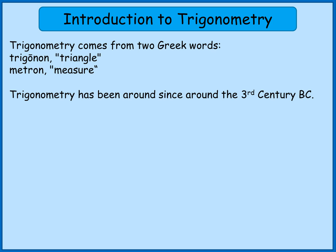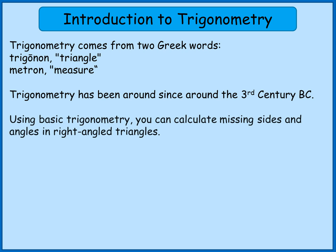It's been around since the third century BC, so it's one of the oldest bits of maths that we've got. The basic trigonometry work is used to calculate missing sides and angles in right-angled triangles. You can do a lot more complicated things with trigonometry later on as well, but we're just going to focus on the real basics today — looking just at right-angled triangles.